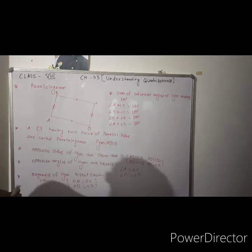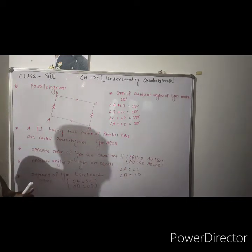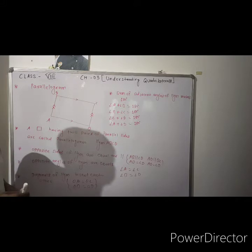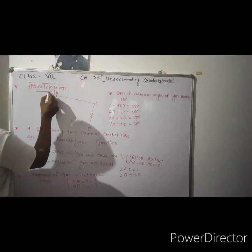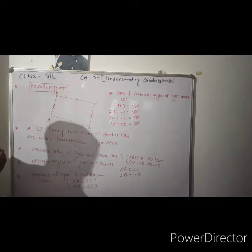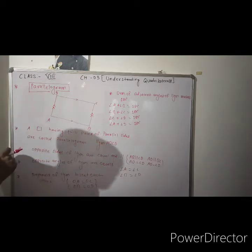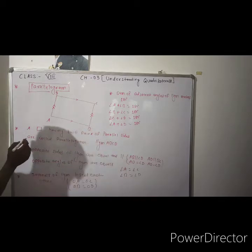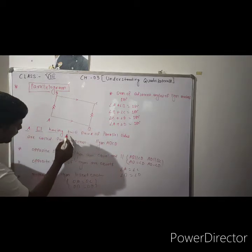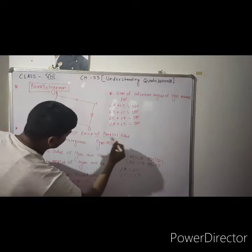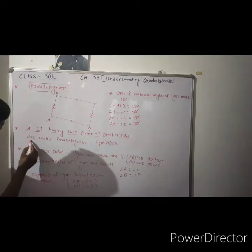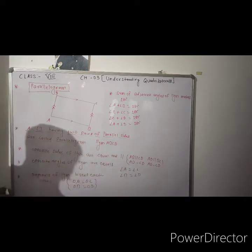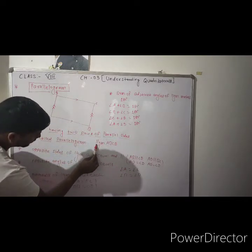Good morning students. Today I am going to explain the types of quadrilateral. There are different types of quadrilateral we will learn. The first type is a parallelogram. The definition of a parallelogram is: a quadrilateral having two pairs of parallel sides is called a parallelogram.